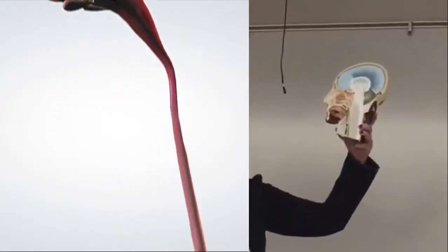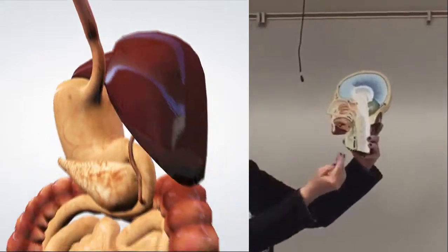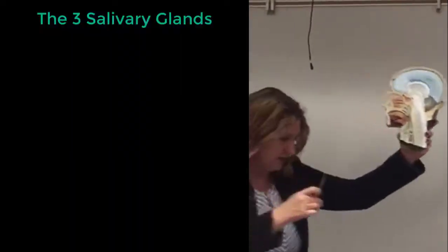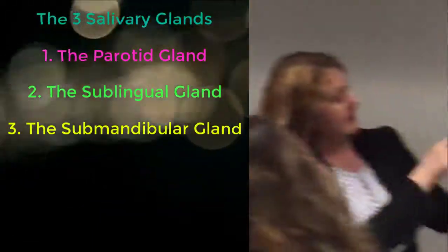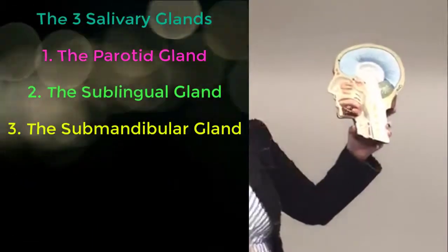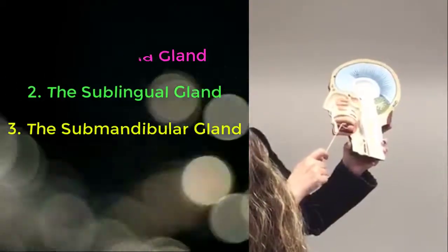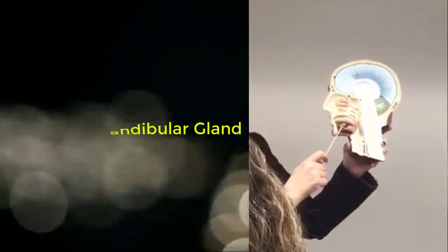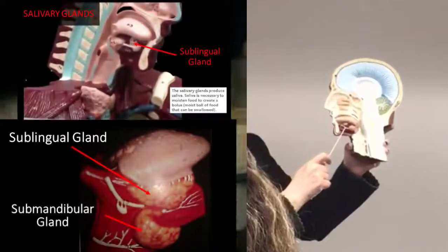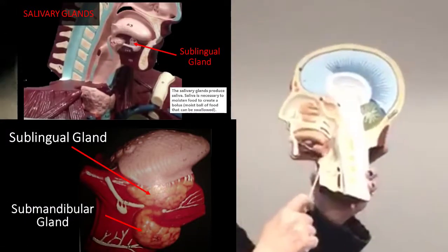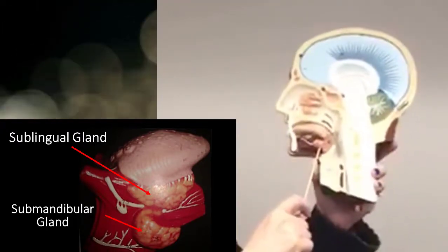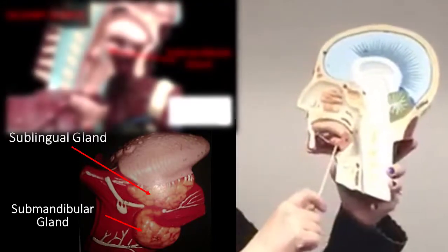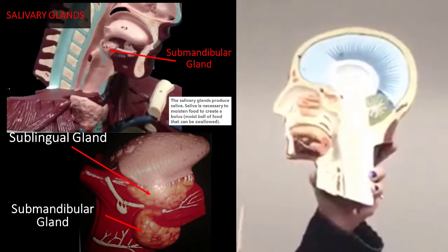The other two salivary glands: you have one salivary gland that sits anteriorly, just below the tongue — that is your sublingual salivary gland. A little bit lower and a little bit more posterior, you're going to get the submandibular gland. And all three of those are salivary glands.